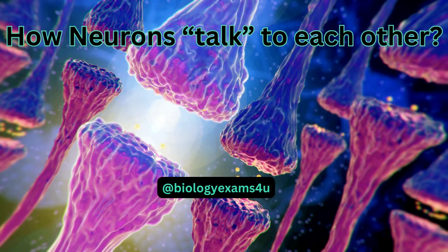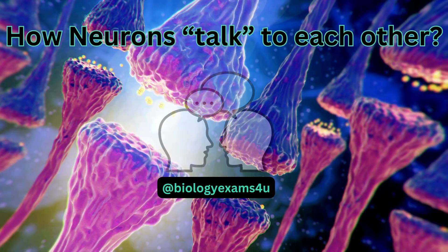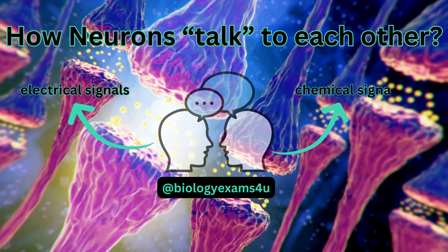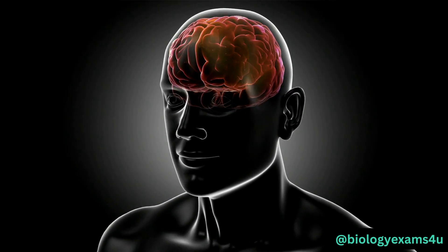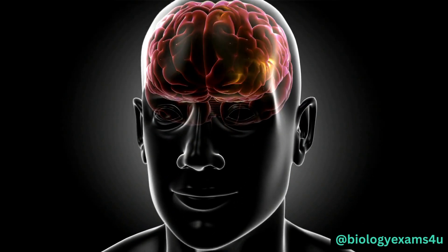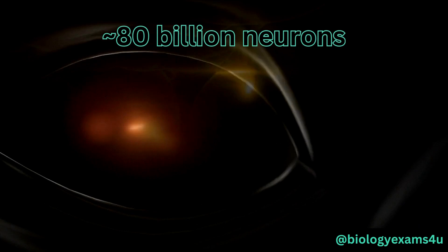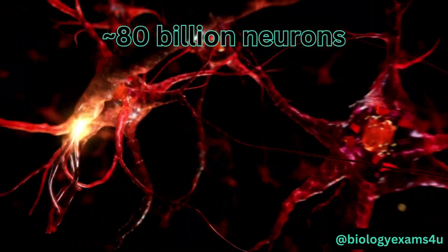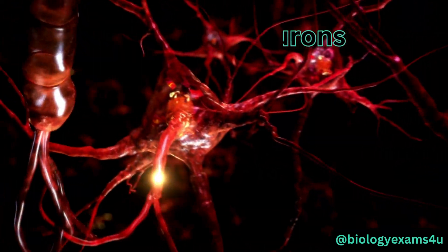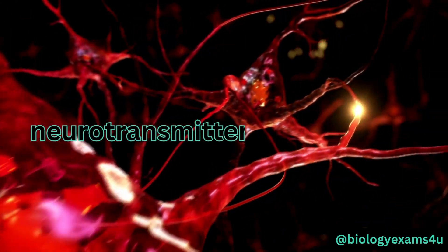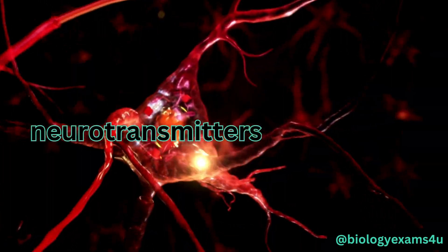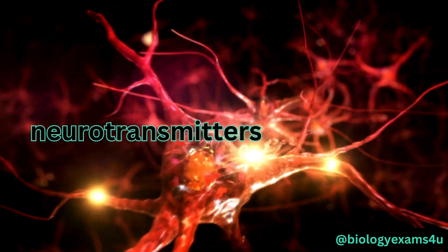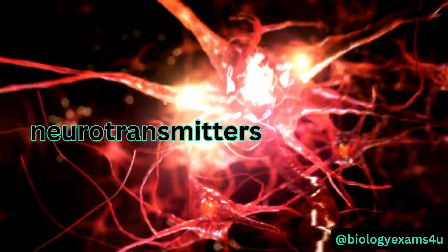Neurons communicate with each other through electrical and chemical signals. Our brain has approximately 80 billion nerve cells, called neurons. Neurons talk to each other using special chemicals called neurotransmitters. Neurotransmitters are like chemical words, sending messages from one neuron to another.